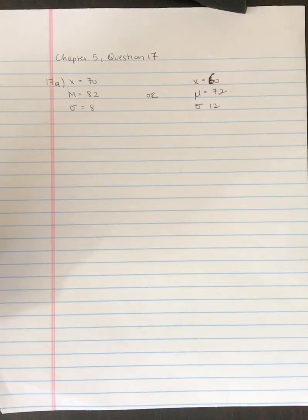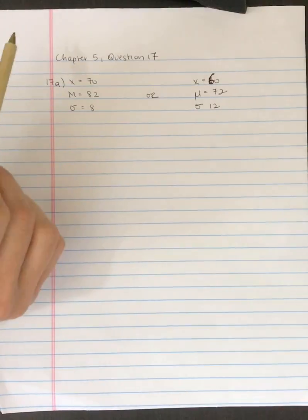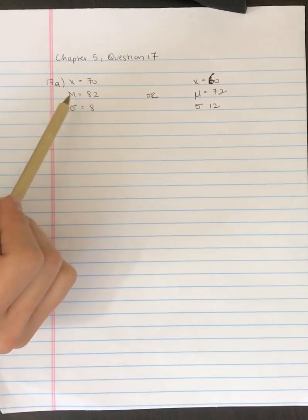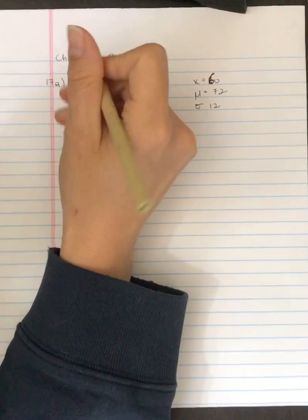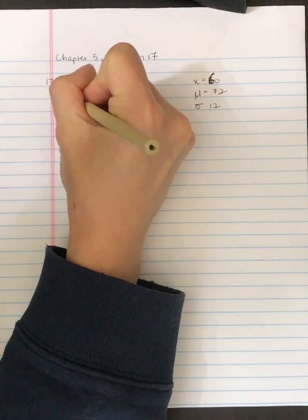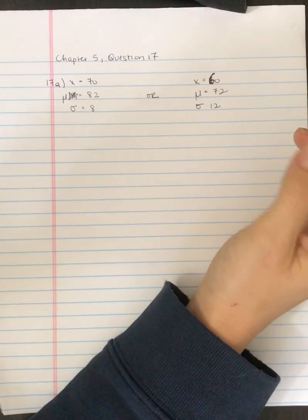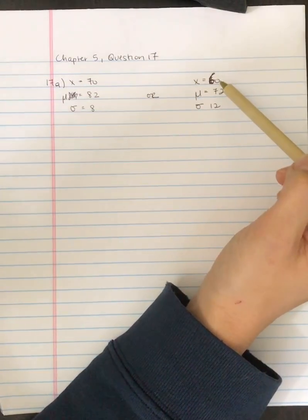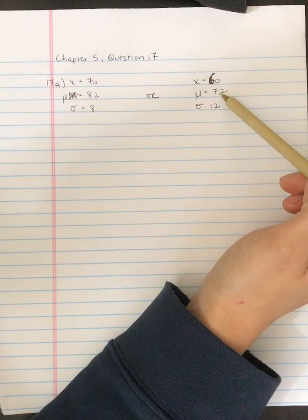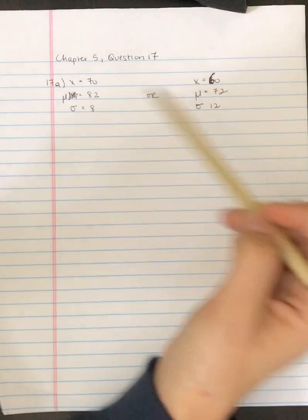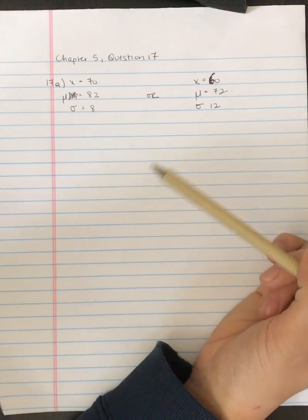In question 17a it says a score of 70 on an exam with a mean of 82 and a standard deviation of 8, and this is straight from the book but this M should be a mu, or a score of 60 on an exam with a mean of 72 and a standard deviation of 12. And so what we need to do is convert each of these into z-scores and then compare them.